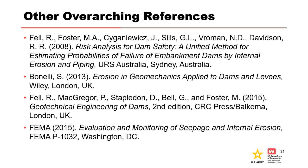Benelli 2013 compiled information for soil contact erosion, backward erosion piping, and concentrated leak erosion from the primary authors who were working on ICOLD Bulletin 164. It contains more detail than the ICOLD Bulletin. For Corps personnel, the Benelli 2013 document can be downloaded from Wiley's online library by chapter if connected to the Corps network.